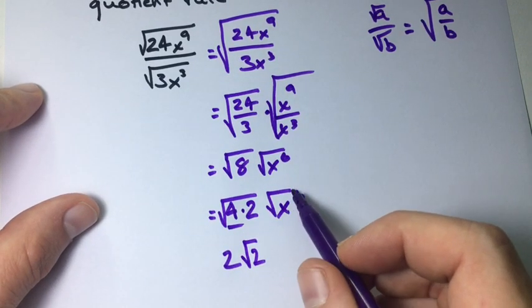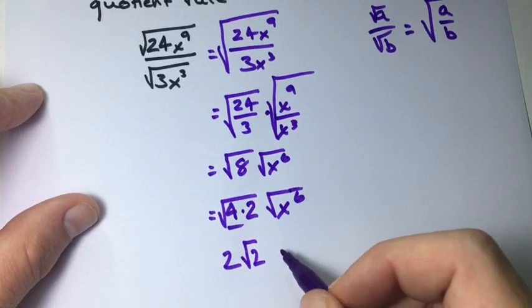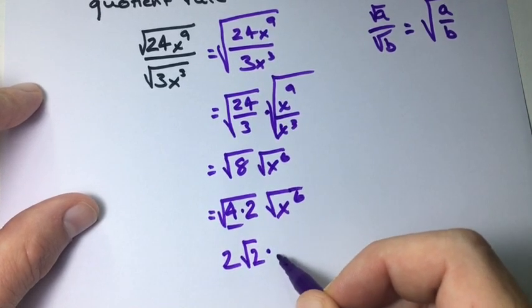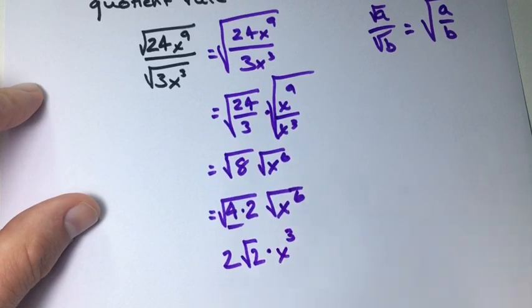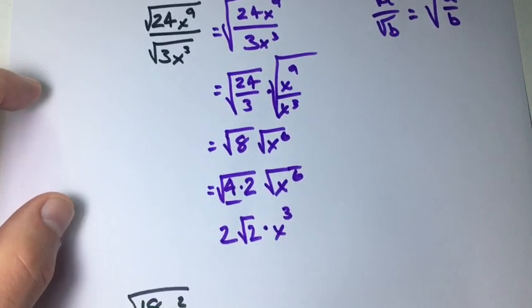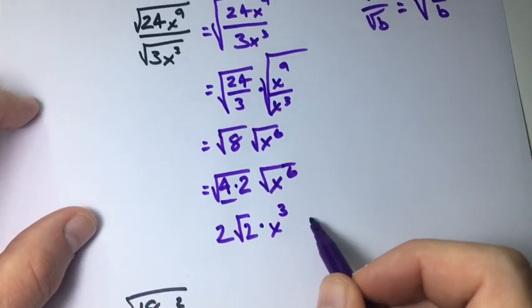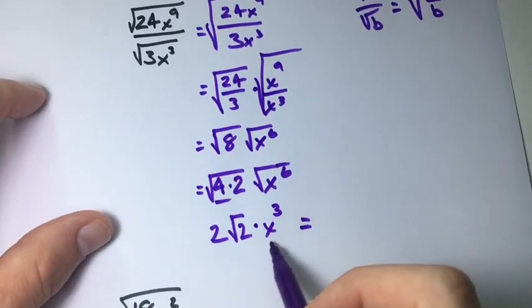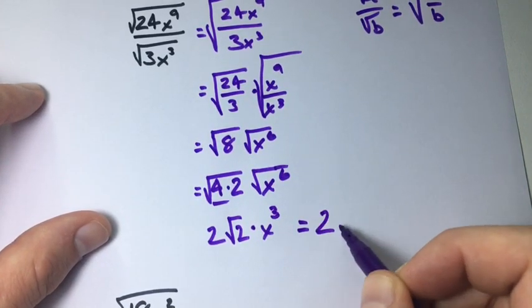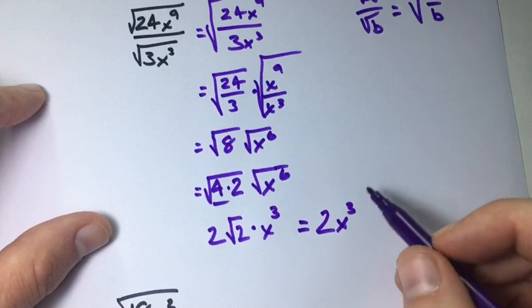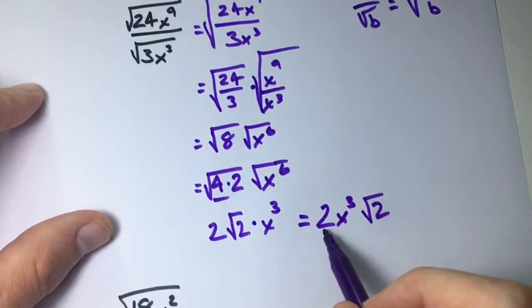Now we have x to the power of 6. That's a perfect square. So all of that times x to the power of 3. Now to make this final, we want to just move our exponent to the front. So this gives us the answer of 2x to the power of 3 times the square root of 2.